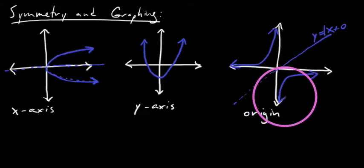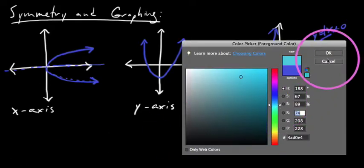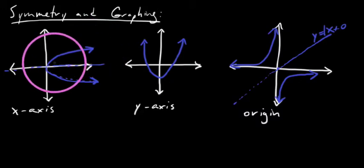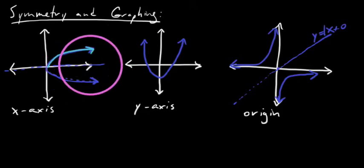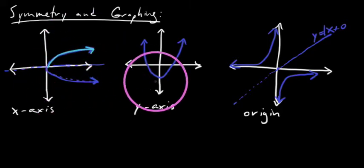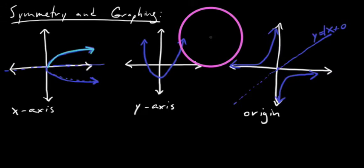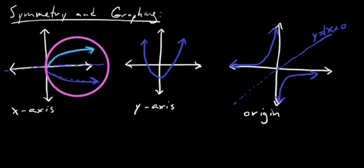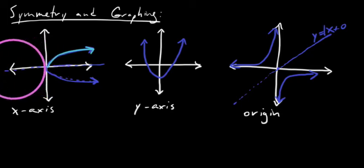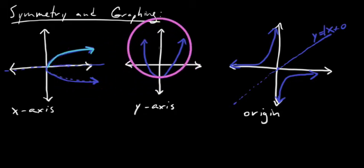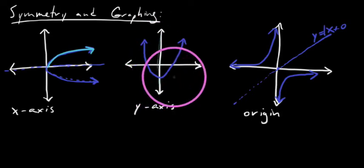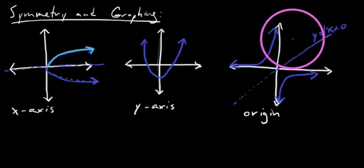Let's talk about what symmetry necessarily means. When I said mirror image, what we're putting out there is that you could fold half the graph over the line of symmetry onto the other half. When discussing X-axis, Y-axis, and origin symmetry, the X-axis has all Y-values equal to zero, the Y-axis has all X-values equal to zero, and when we talk about origin symmetry we can play off both of these.